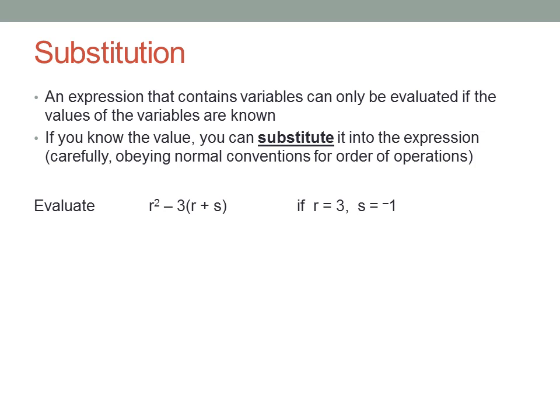Now exactly the same process works if you have multiple variables, or if the same variable appears more than once. Evaluate r² - 3(r + s) if r equals three and s equals negative one. So what we're going to do is put a three wherever there's an r, and a negative one wherever there's an s. Sometimes you may need brackets to substitute a negative number, but in this case we're okay.